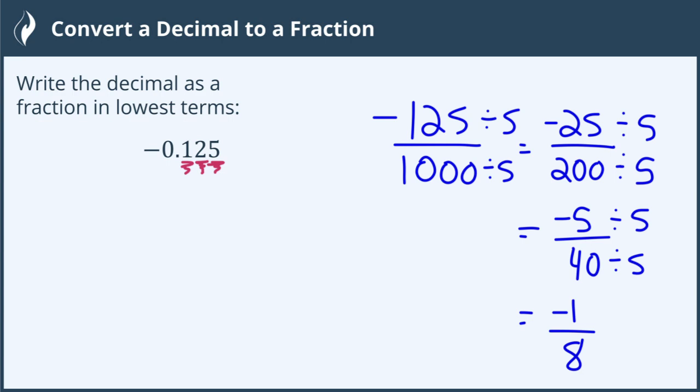So here, negative 0.125 can be written in its most simplified form as negative 1 eighth.